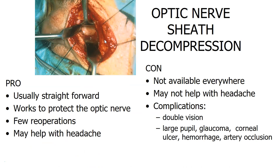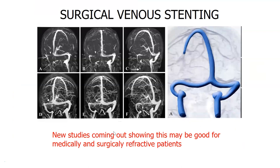Optic nerve sheath fenestration is performed by an oculoplastic surgeon. We no longer use the lateral approach shown in older images — now we use a medial or supraorbital approach above the eye crease so it's barely visible. The goal is to relieve fluid pressure on the optic nerve. It's usually straightforward, protects the optic nerve, has few reoperations, and helps headache somewhat — though less than ideal. Complications include double vision and occasional pupillary changes; it's not available everywhere.